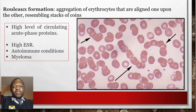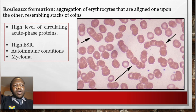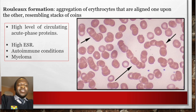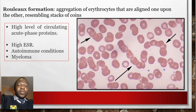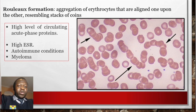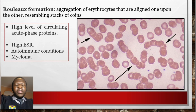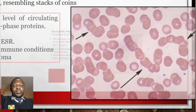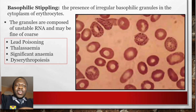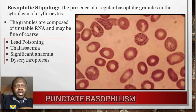Rouleaux formation is an aggregation of erythrocytes aligned one upon the other like a stack of coins. This is a normal characteristic of RBCs but is especially seen with high levels of circulating acute-phase proteins during inflammation. It is also associated with high erythrocyte sedimentation rates, autoimmune conditions, and myelomas.